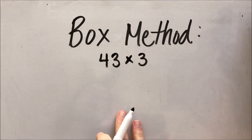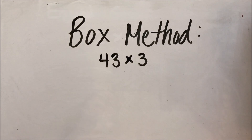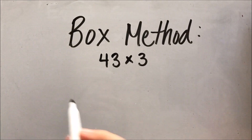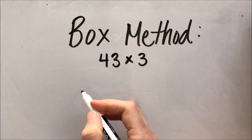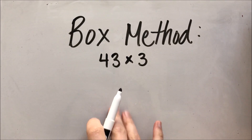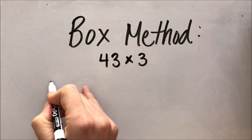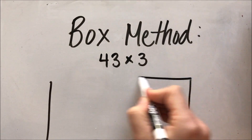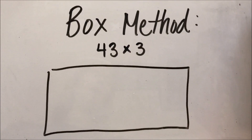The next strategy I want to show you is what's called the box method. This is a method that students will often use in fourth grade, and the fourth grade teachers really like to use it. I'm going to show you two different ways: one being if you don't know your math facts yet, and the second being if you do have them memorized, making it a little bit easier. So when I do 43 times 3 and I use the box method, the first thing I need to do is draw a box.